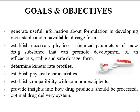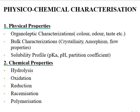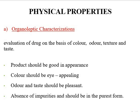Further objectives include establishing compatibility studies with common excipients, providing insight into how the drug product should be processed, and producing optimal drug delivery systems. Under physico-chemical characterization, we discuss physical and chemical properties. Under physical properties, the three main areas are organoleptic characterization, bulk characterization, and solubility profile. Under chemical properties, we study hydrolysis, oxidation, reduction, racemization, and polymerization.